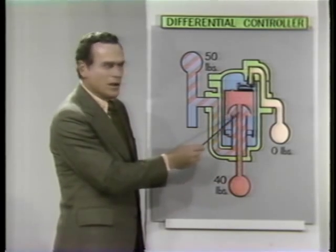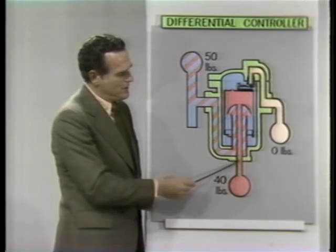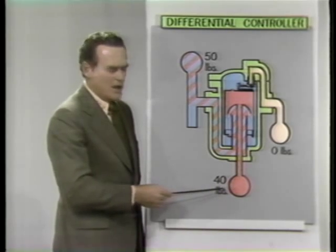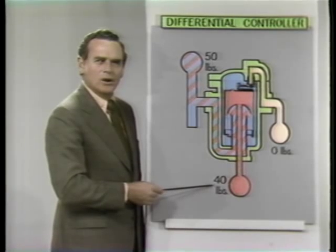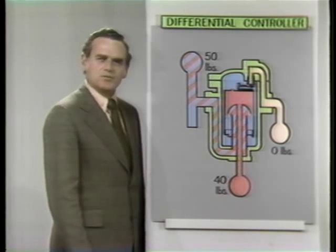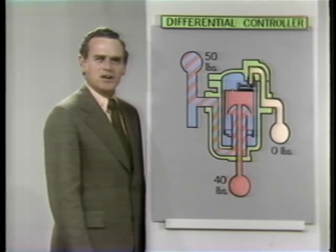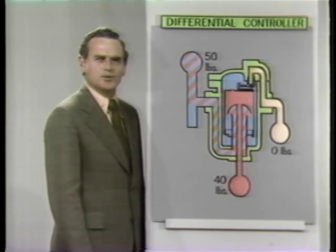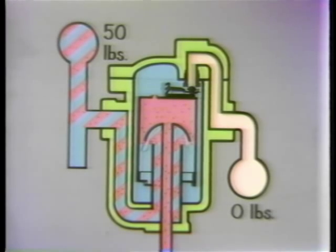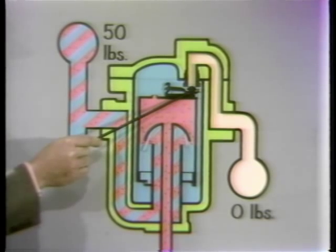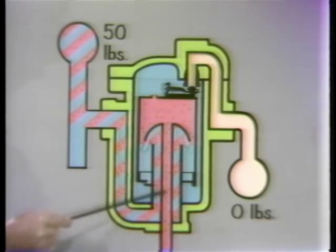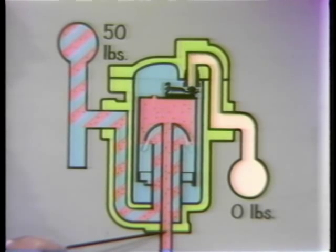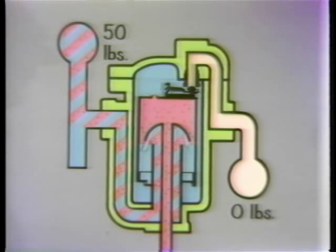The condensate discharges into a low-pressure condensate return header while the steam, flash steam, and air pass through the blow-through tube into a separate header maintained at a preset back pressure. With two separate discharges, each with its own pressure differential, the condensate controller can automatically and immediately adjust to the drainage requirements of the individual dryer that it services. With the condensate orifice closed, the blow-through tube operates like a blow-through system, but with one important difference: it doesn't have to handle condensate.